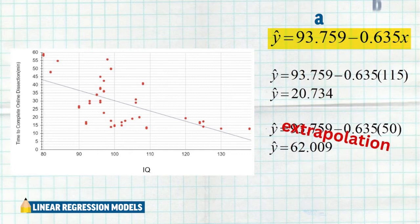And then we see our slope here, that's our b value of negative 0.635. X is, of course, the explanatory variable in this situation, that is their IQ. And y hat is the predicted time it would take them to complete the dissection.